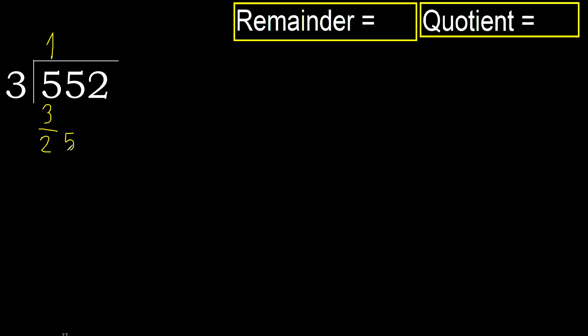Next: 25. 3 multiplied by 9 is 27. 27 is greater. Multiplied by 8: 24 is not greater. Ok, subtract: 25 minus 24 is 1.